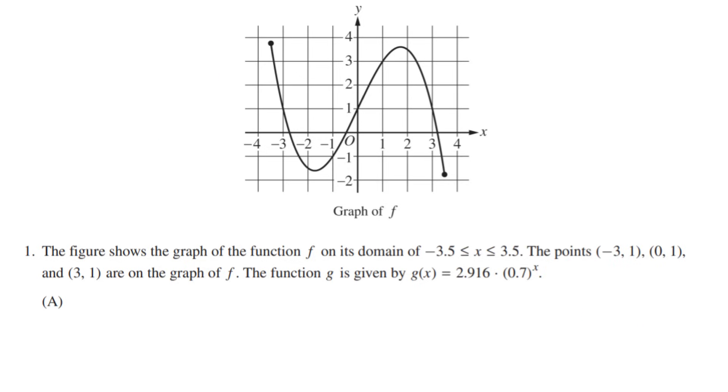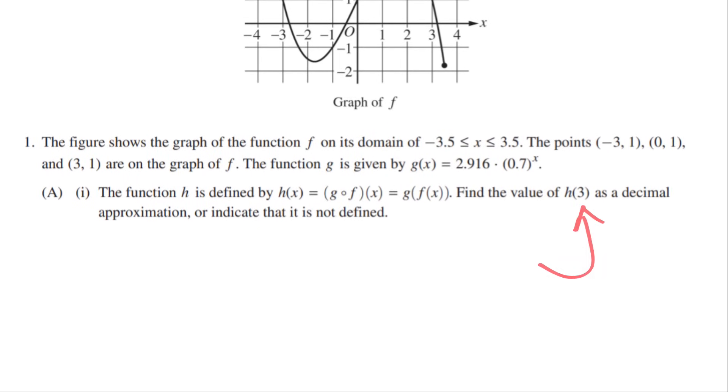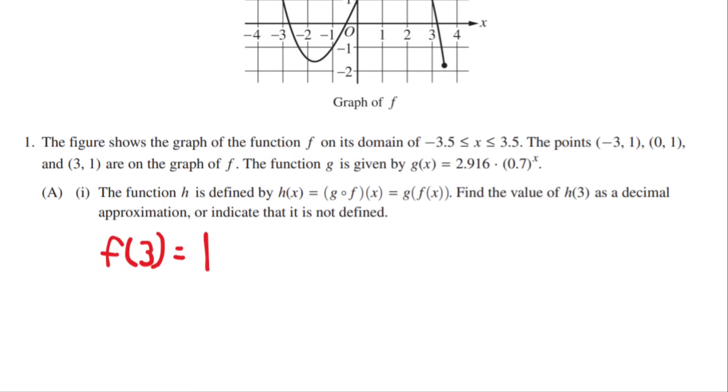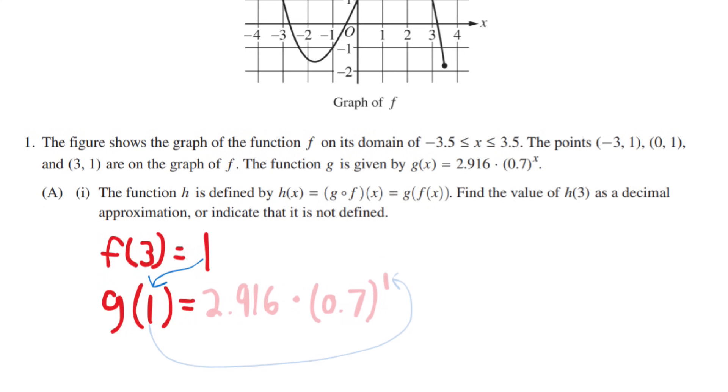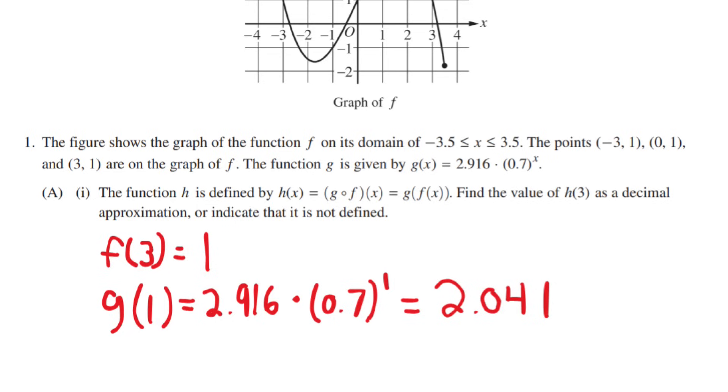Now, let's read the A part. The function h is defined by h of x equals g of f of x. Find the value of h of 3 as a decimal approximation, or indicate that it is not defined. When we are given something like this, we start from the inside and go to the outside. Since 3 is on the inside, and f is on the inside of g, we need to find first what f of 3 is equal to. Looking at the graph, f of 3 is equal to 1. So now we find g of 1. So we plug 1 into the g equation, and after plugging this into our calculator, we get 2.041. That means h of 3 is equal to 2.041.